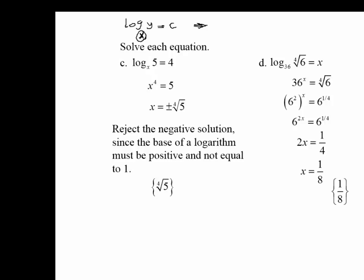We take the base x to the power of c equal to y. So here we're taking the base x to the power of 4 equal to 5. To solve for x, we have to eliminate this 4 by taking the fourth root of both sides — raising both sides to the power of 1 over 4. So x equals plus or minus the fourth root of 5. We reject the negative solution since the base of a logarithm must be positive and not equal to 1, so the fourth root of 5 is the only solution.